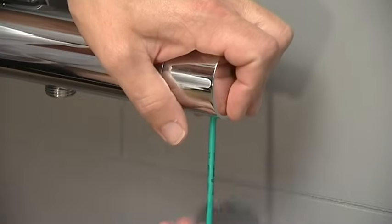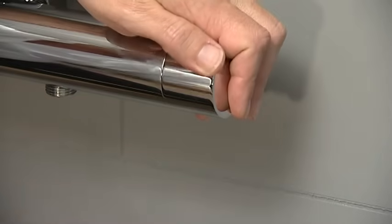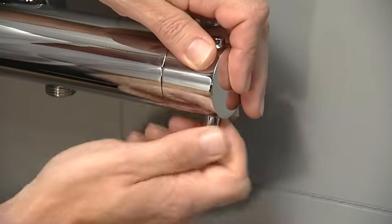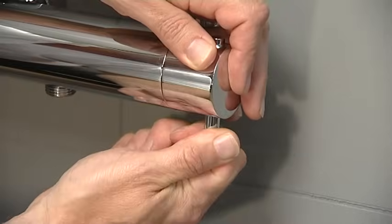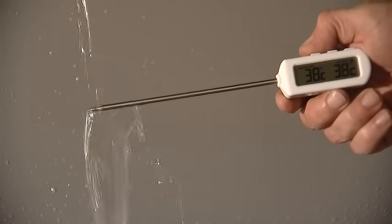Tighten the grub screw using the hex key. Replace the prong. Recheck the temperature to ensure that calibration has been successful.